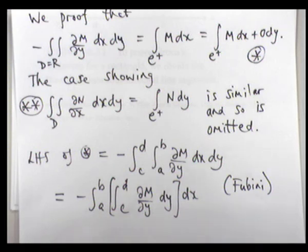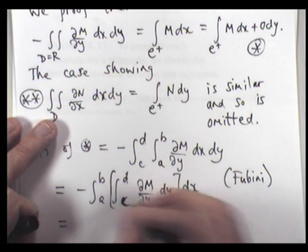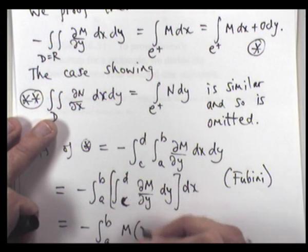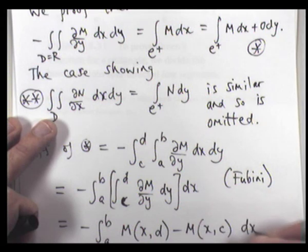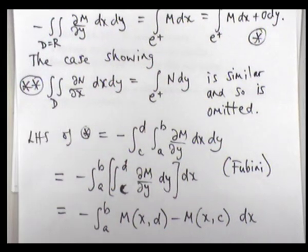After applying Fubini's theorem, we have differentiation and integration together, so by the fundamental theorem of calculus we obtain an expression along the boundary. Now we work on the line integral around the boundary of the rectangle and show it equals that result.